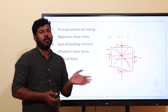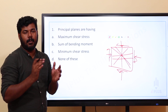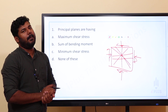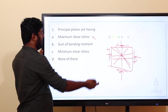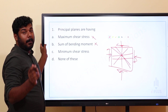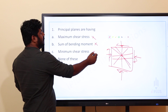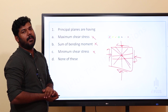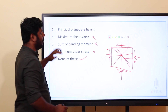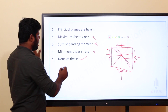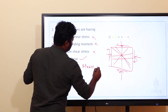In one plane, the normal stress is maximum, and in another plane, the normal stress is minimum. The question is: what are principal planes having? When we have a principal plane, the shear stress is zero. The options are maximum shear stress, minimum shear stress, but the correct answer is: the shear stress on a principal plane is zero.